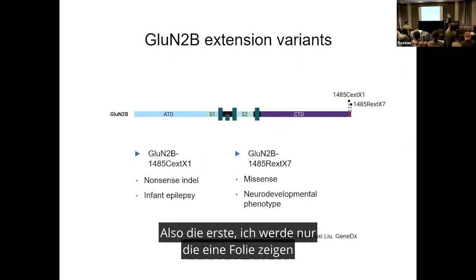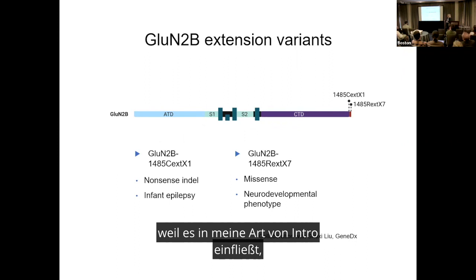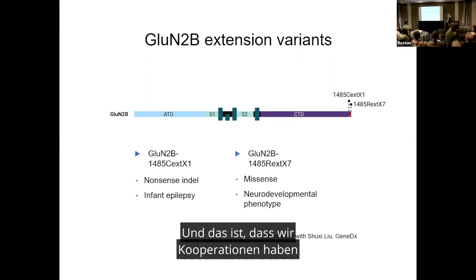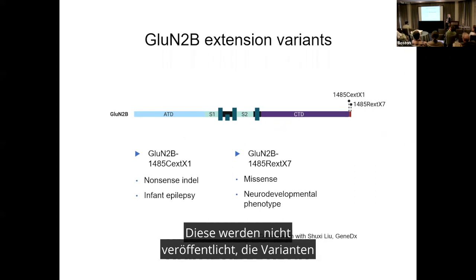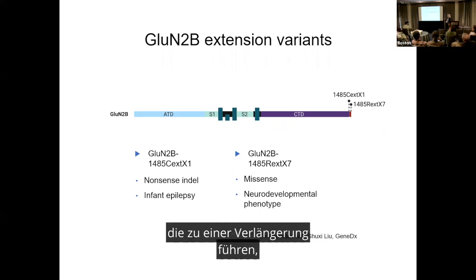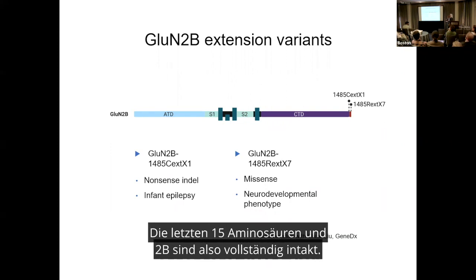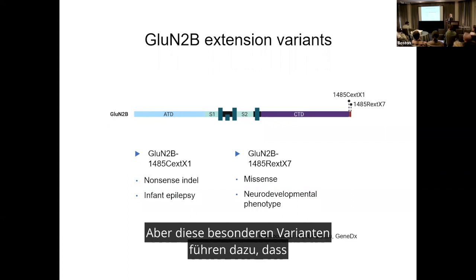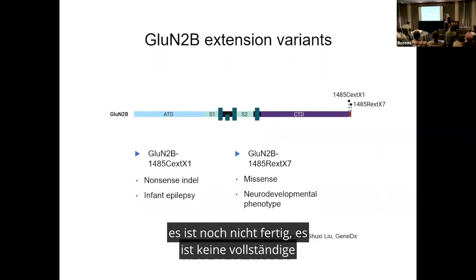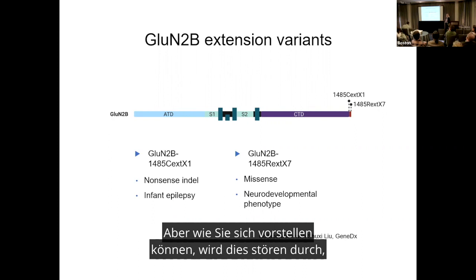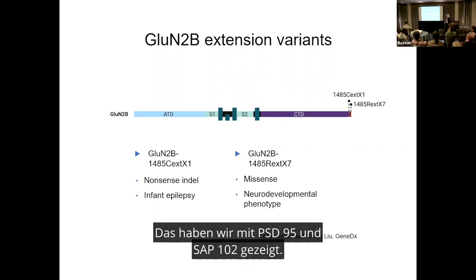The first example I'll show on just one slide because it feeds into my introduction. We have a collaboration with GeneDx — a former postdoc works there. They have two patients in their databases, not published, that have variants resulting in a C-terminal extension, which I find completely fascinating. The last 15 amino acids of GluN2B are completely intact, but these particular variants result in either a 1 or 7 amino acid extension. We've started some experiments showing this disrupts binding to PSD-95 and SAP102.